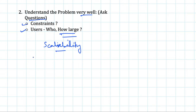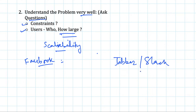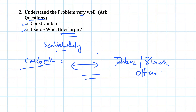It's also very important to understand the problem well because the same kind of application may be used in different places by different users with varying use cases. For example, Facebook is a social messaging app used by the general public, whereas messaging apps like Jabber or Slack are used in offices, so their use cases vary a lot. It's very crucial that you clarify whatever doubts you have with the interviewer about the various use cases and constraints of the problem.